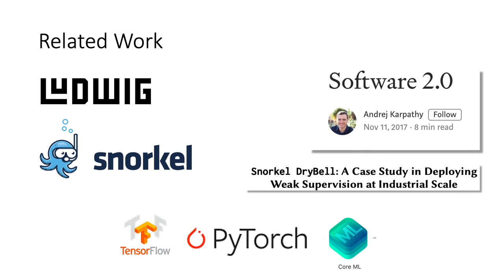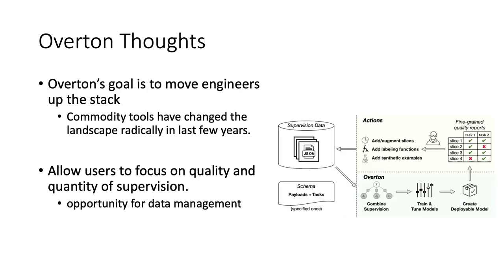As a community, our real opportunity is to build the next layer of abstraction on top of these systems. In conclusion, Overton's goal is to move engineers up the stack — commodity tools have changed this landscape radically in the last few years. Our goal is to focus on quality and supervision management. This is a great opportunity for data management and systems folks, and I hope more people work on these problems that are up the stack. It's a chance for us to lead the next chapter of machine learning systems. Thanks so much for your time and attention.